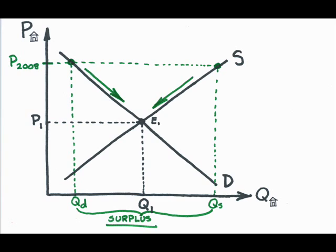When will the price stop falling? When the surplus goes away and the downward pressure eases. This means that when the quantity supplied equals the quantity demanded at P1, the market stabilizes. So P1 and Q1 must be the market equilibrium price and quantity.